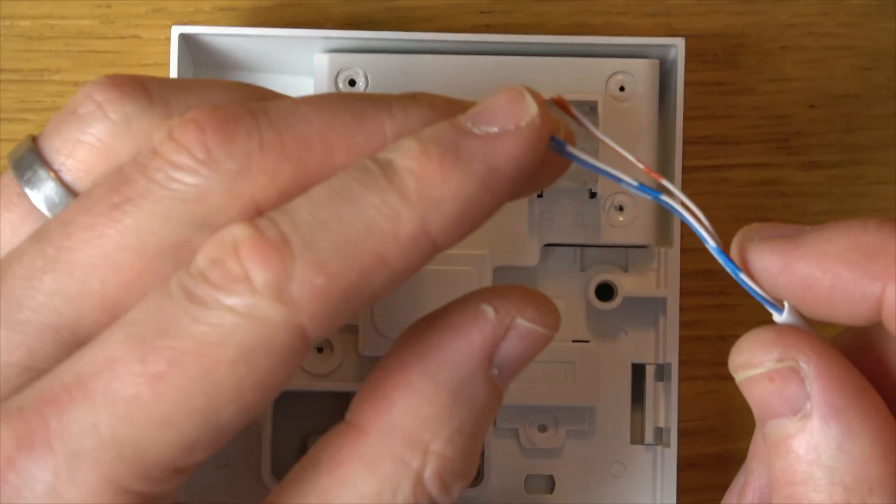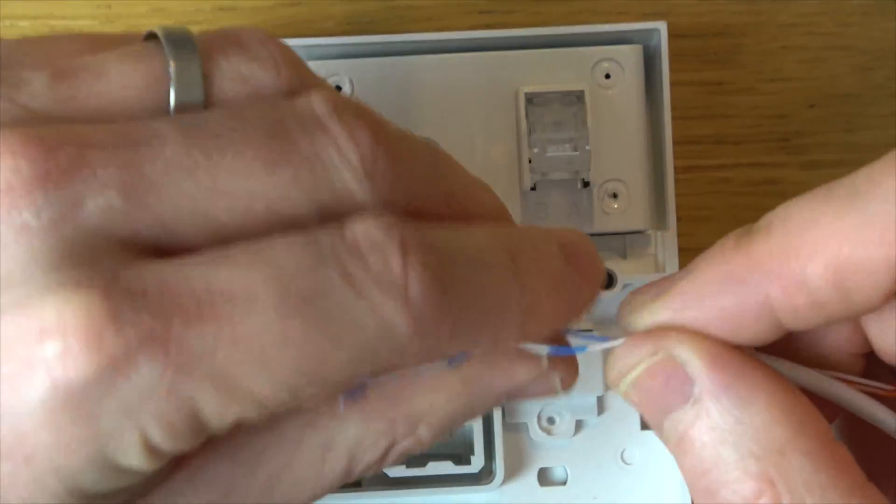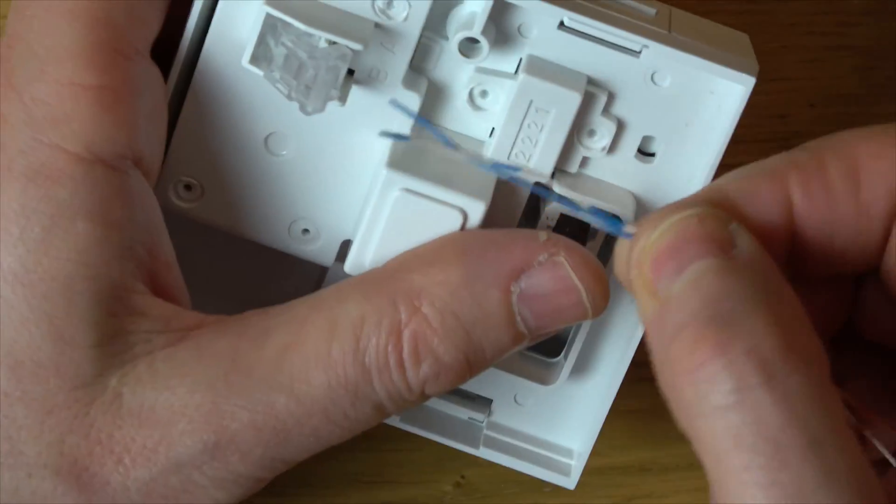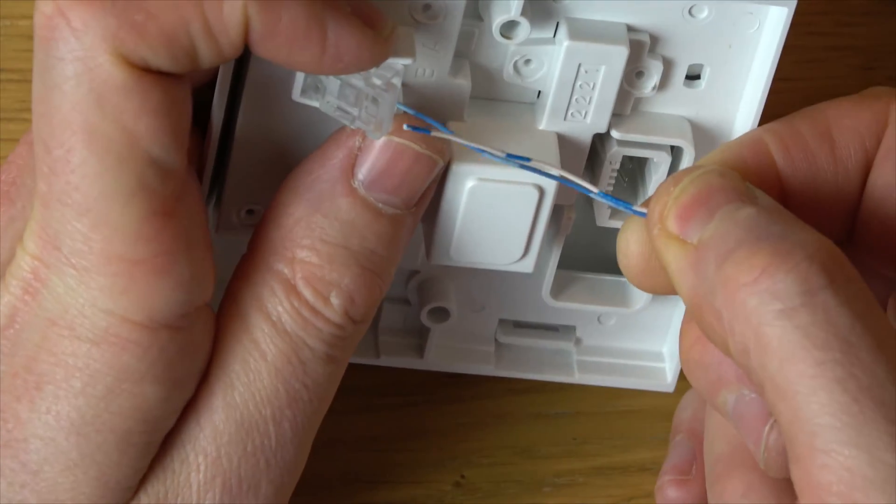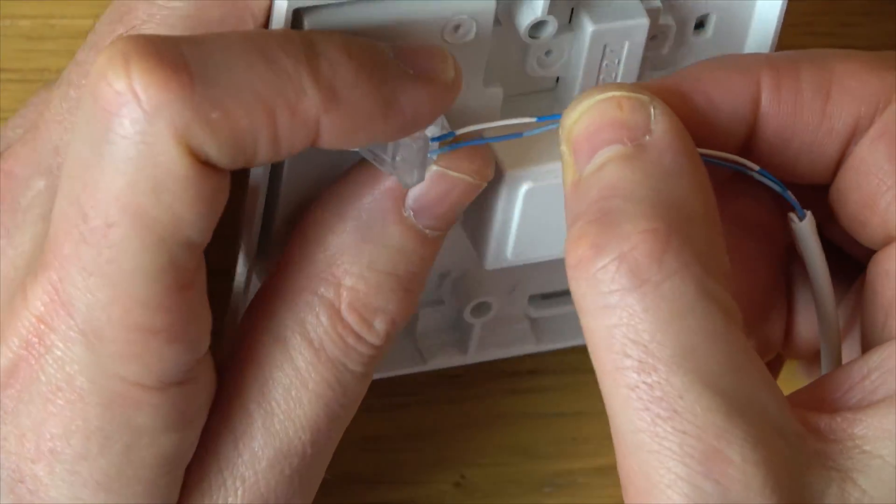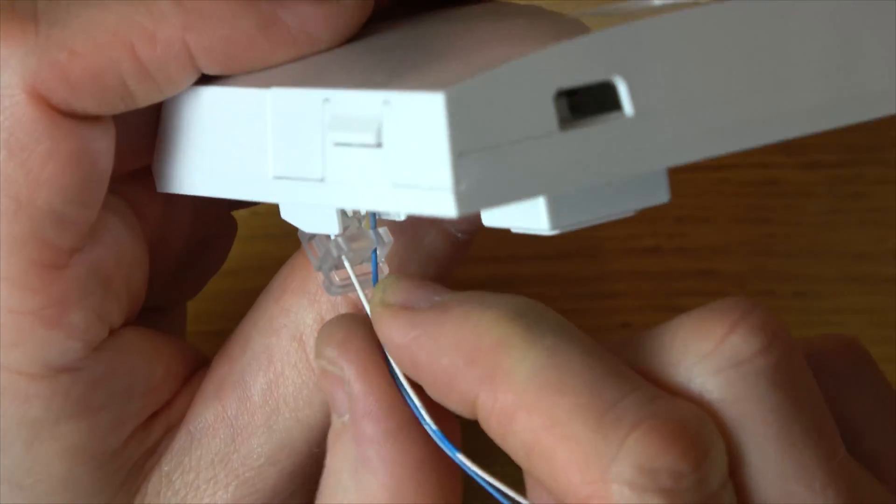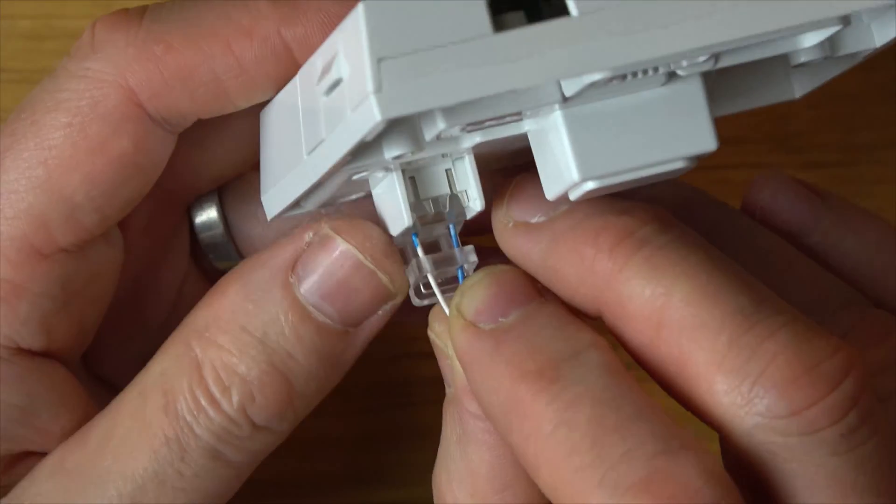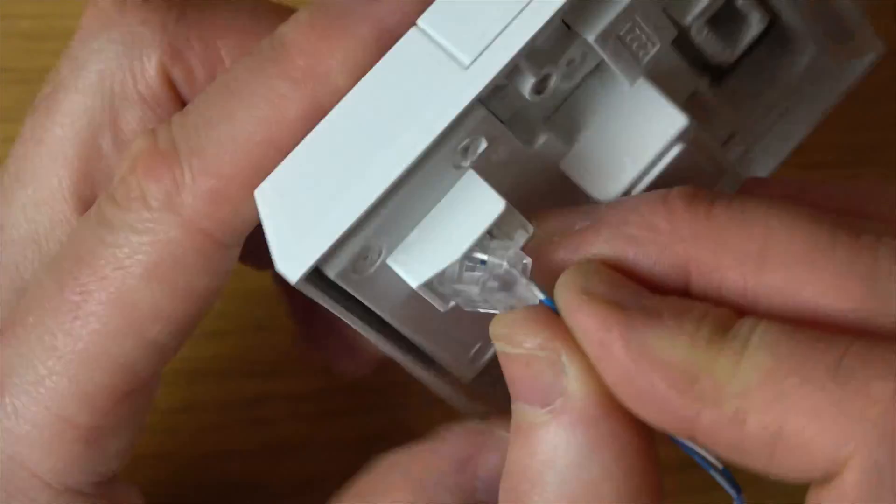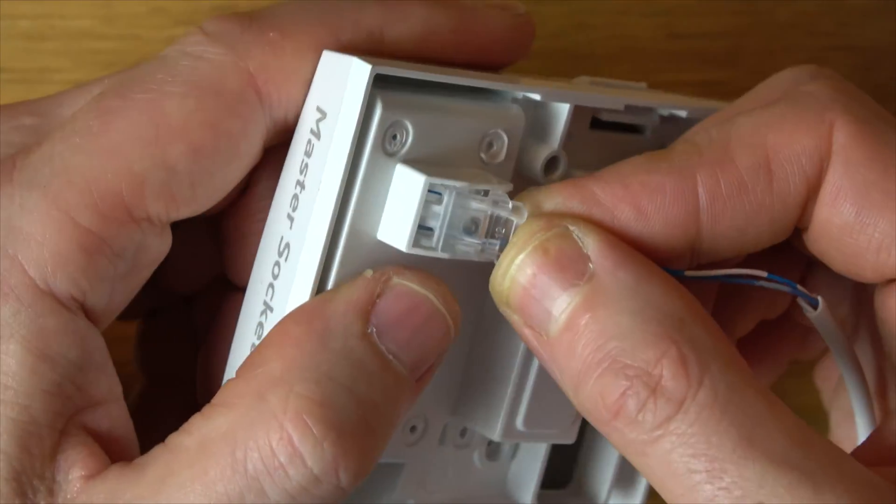Now we're going to be connecting up the blue and the white blue, but you might have green and black, you might have orange and white, it will just depend on the age. So we're going to be putting the white blue into A and the blue into B. Basically we have these little holes here and then more holes at the back. You need to make sure that the wire goes through both lots of holes. You can see a visual indication on the top that it's gone right to the very end.